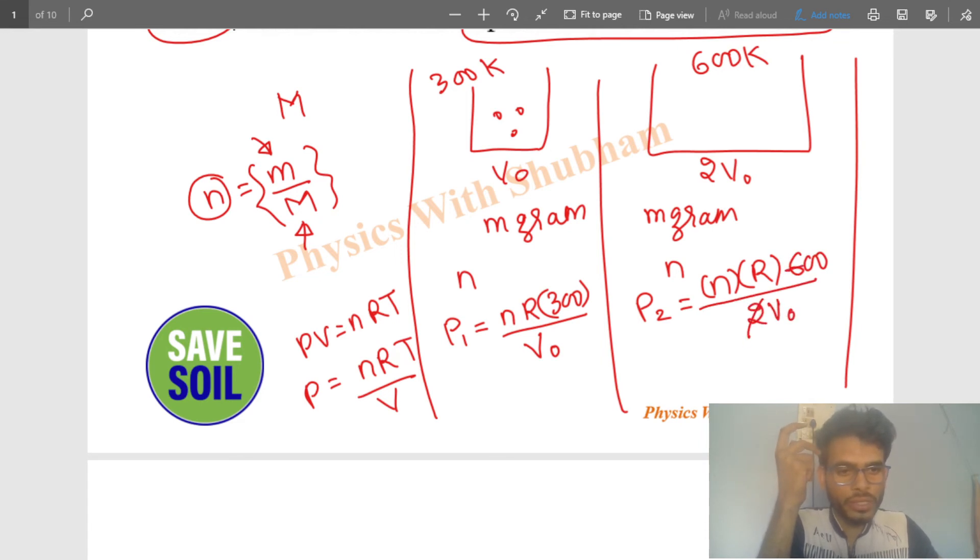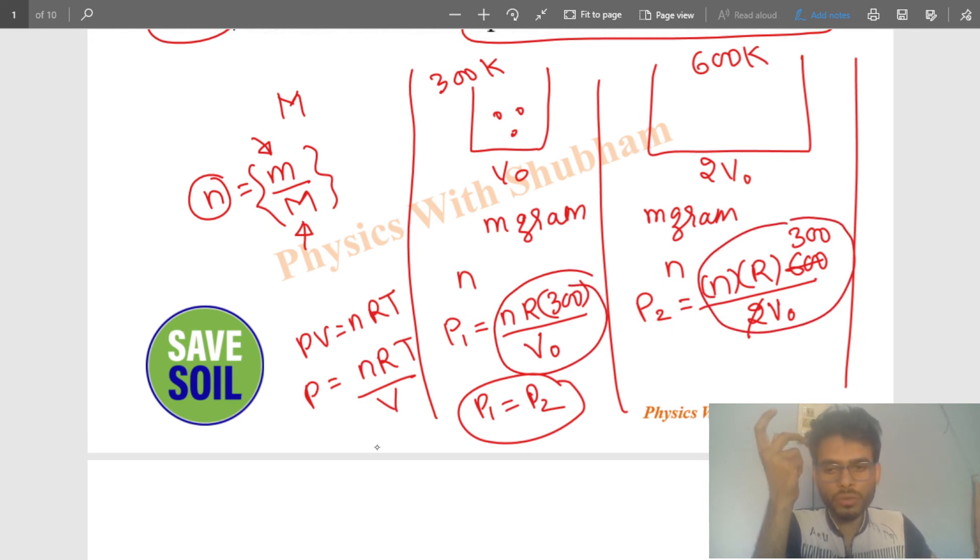That is, nR times 300 divided by V naught equals nR times 300 divided by V naught. So P1 equals P2. This means the ratio of the pressures will be 1:1.